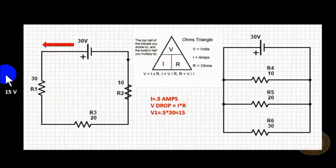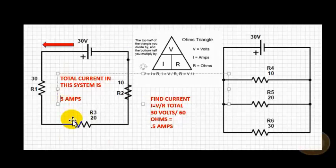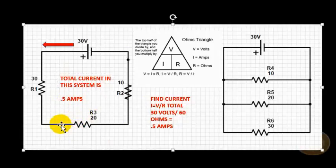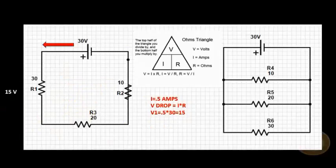Let's find voltage drops. Voltage is current, which we have defined as 0.5 amps in the previous slide. The total current through this system is 0.5 amps. So voltage equals current times resistance. The voltage drop across resistor one is 0.5 times 30, which equals 15 volts. It goes from 30 to 15 across this resistor.